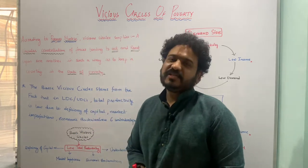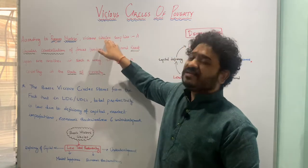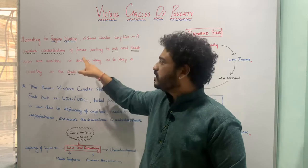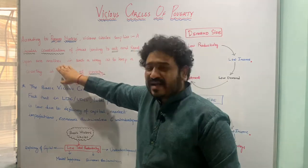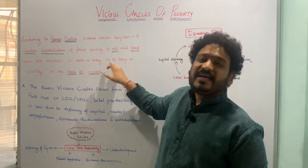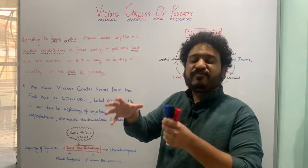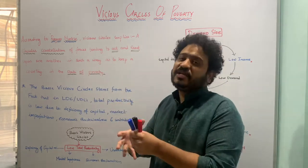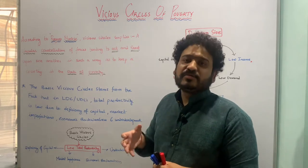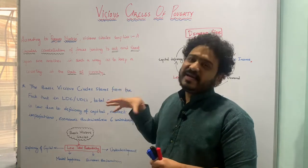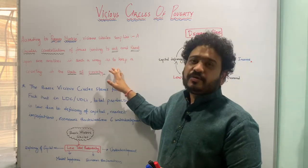First of all we shall look at the definition given by Ragnar Nurkse. According to Ragnar Nurkse, vicious circles implies a circular constellation of forces tending to act and react upon one another in such a way as to keep a country in a state of poverty. These are forces acting and reacting upon each other in a circular fashion that leads to poverty in an economy or country.